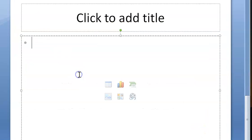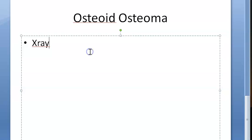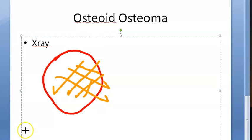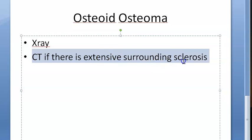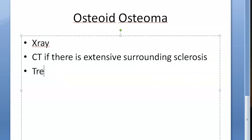On X-ray, the tumor is visible as a zone of sclerosis surrounding a radiolucent nidus, which is less than one centimeter in size. In some cases the nidus may not be seen on a plain X-ray, and you may need to do a CT scan. CT is required especially when there is extensive surrounding sclerosis. The nidus is typically less than one centimeter.